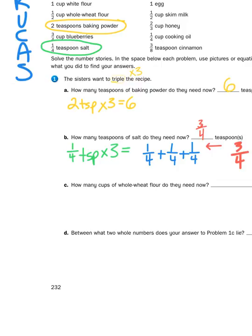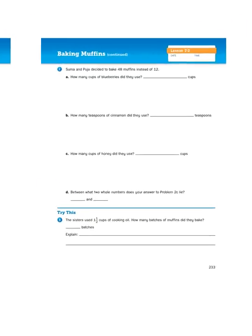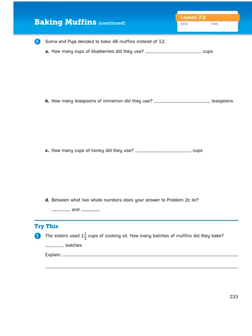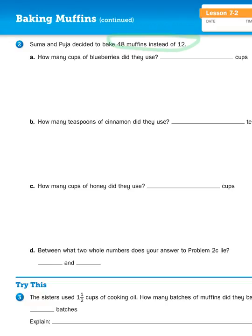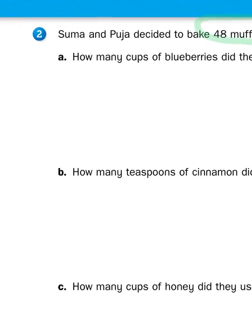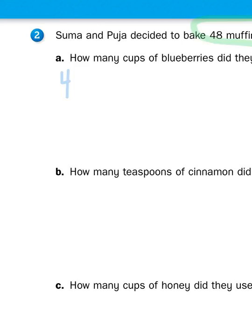Alright, so let's find another problem that requires us to multiply a fraction. Now, on the top of page two, they ask us how many cups of blueberries did they use if they decided to bake 48 muffins instead of 12? Now, 48 is larger than tripling. So we first need to figure out to what factor are we multiplying 12?